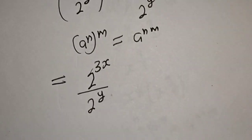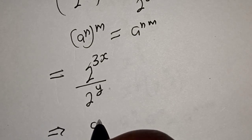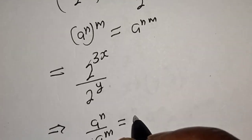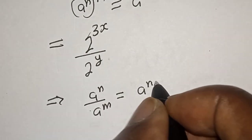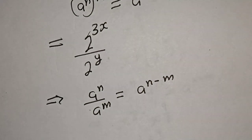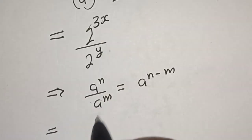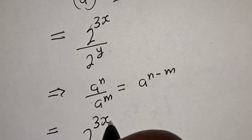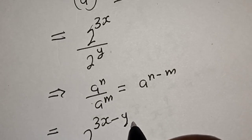If you have e raised to power n over e raised to power m, this is equal to e raised to power n minus m. So this becomes 2 raised to power 3x minus y.